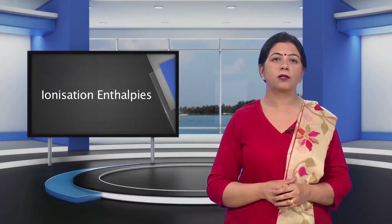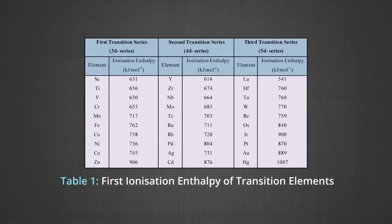The properties of D block elements — let us first study about the ionization enthalpies. There is an increase in the ionization enthalpy along each series of the transition elements from left to right, due to the increase in nuclear charge along with the filling of the inner D orbitals. In the table shown, you can see the values for the first three ionization enthalpies of the first row elements.